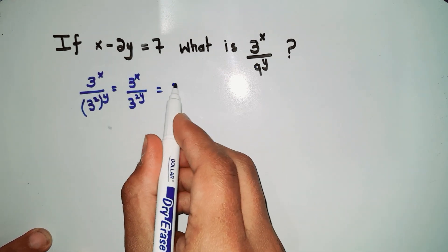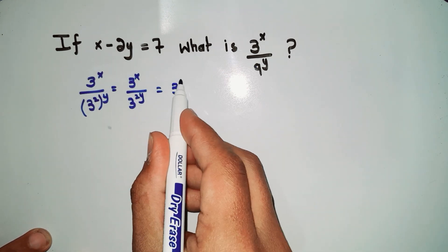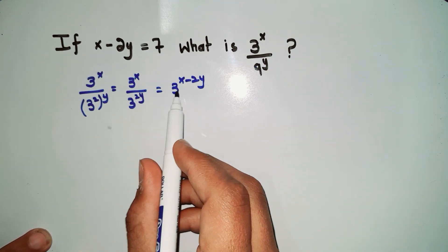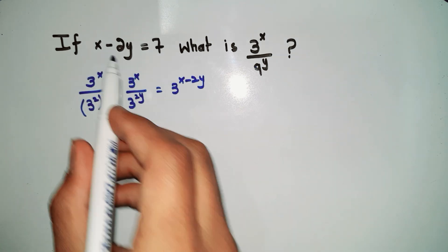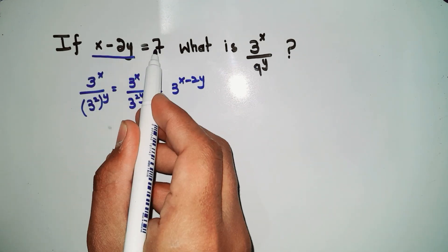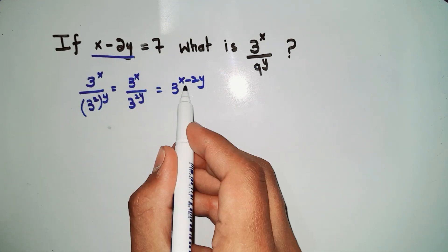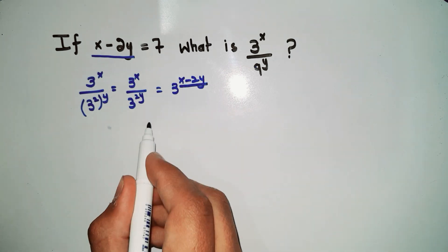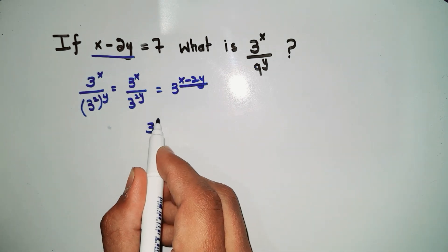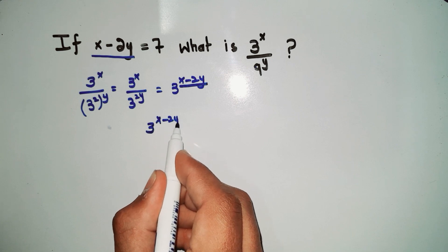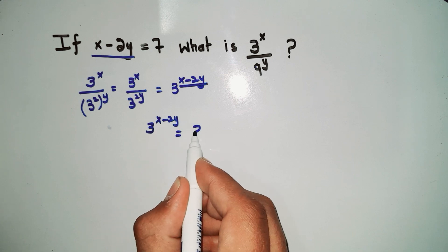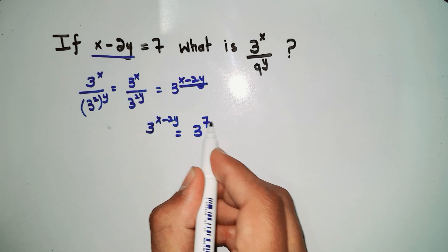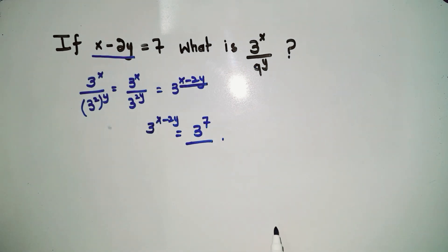This simplifies to 3^(x minus 2y). Since we know that x minus 2y equals 7, we substitute that value in. So 3^(x minus 2y) equals 3^7, and 3^7 is our final answer.